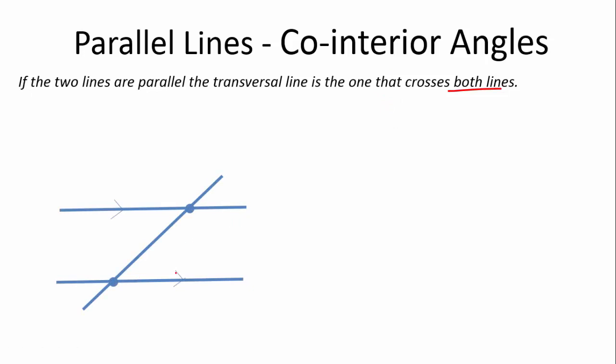So here we have two parallel lines. Parallel lines are indicated by these arrowheads here. There's only one arrowhead on each of these, so that means that these two are parallel to each other. And this here is the transversal line. It is the line that crosses two parallel lines.